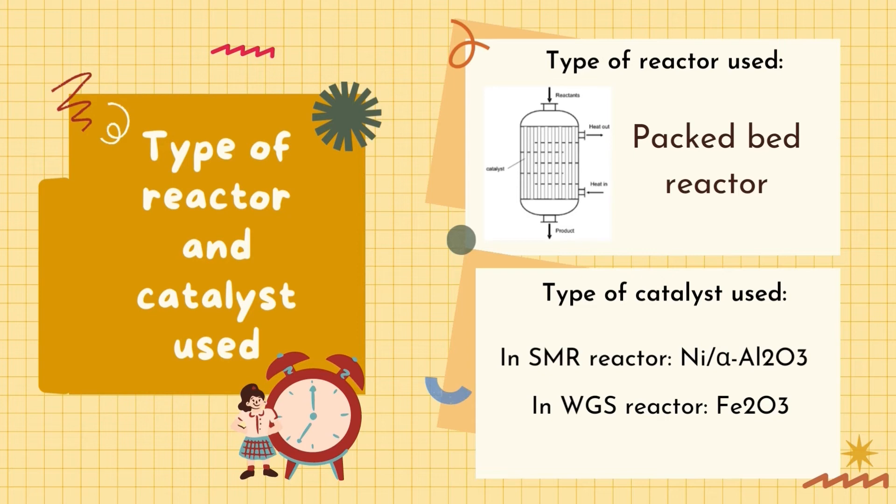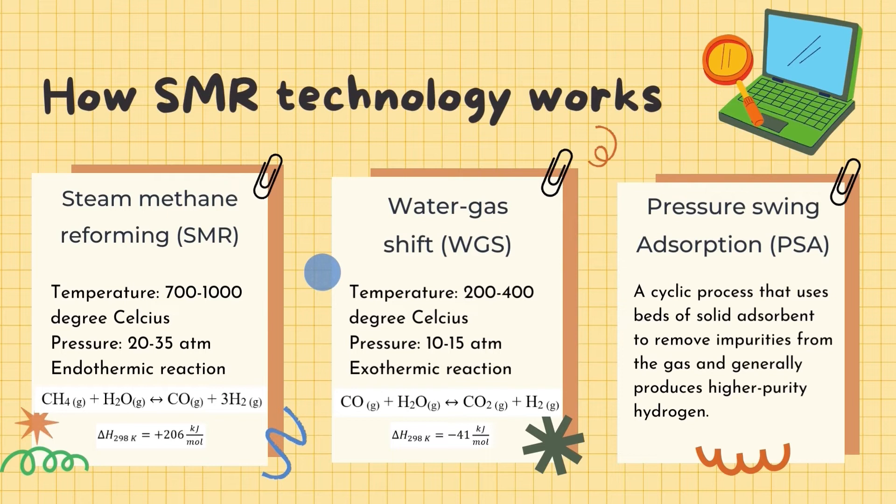SMR technology works by three reactions involved. The first one, steam methane reforming SMR, works at 700-1000 degrees Celsius under 20-35 ATM. This process requires high temperature to favour endothermic reaction. The second process is water gas shift WGS. It works at 200-400 degrees Celsius under 10-15 ATM. This shows that this process is actually exothermic reaction, so it requires low temperature to favour forward reaction.